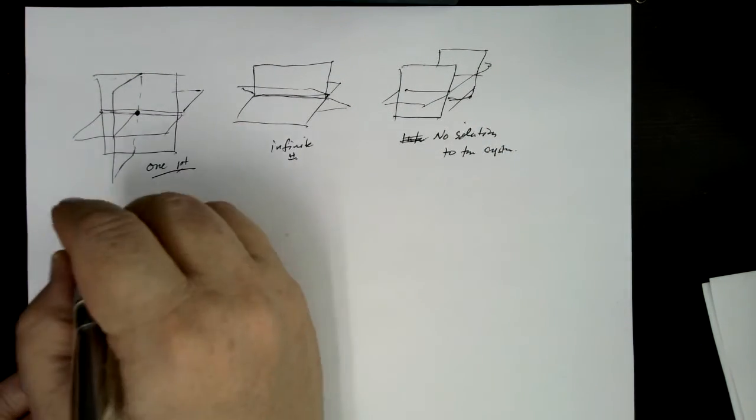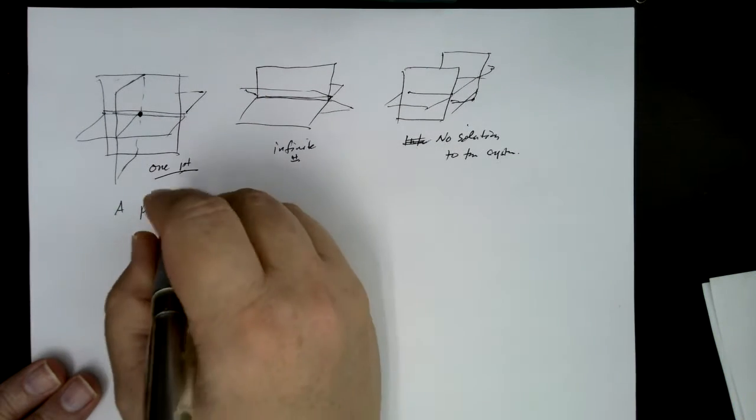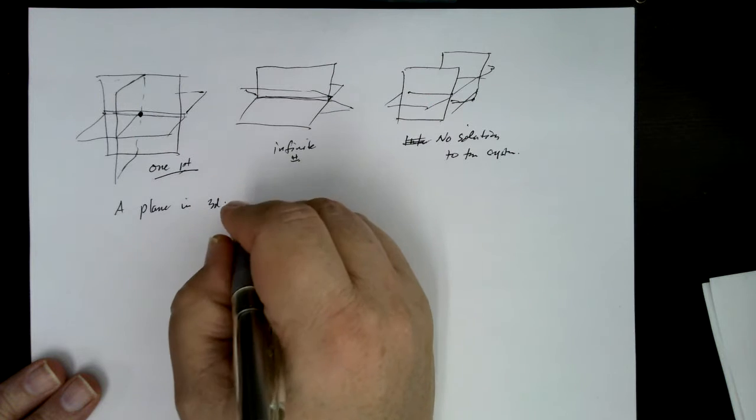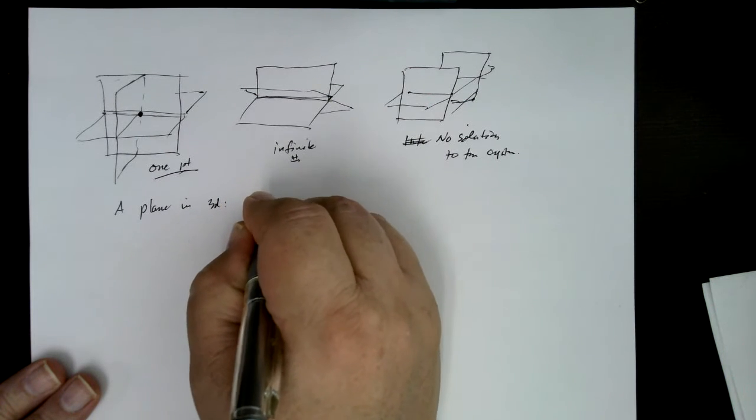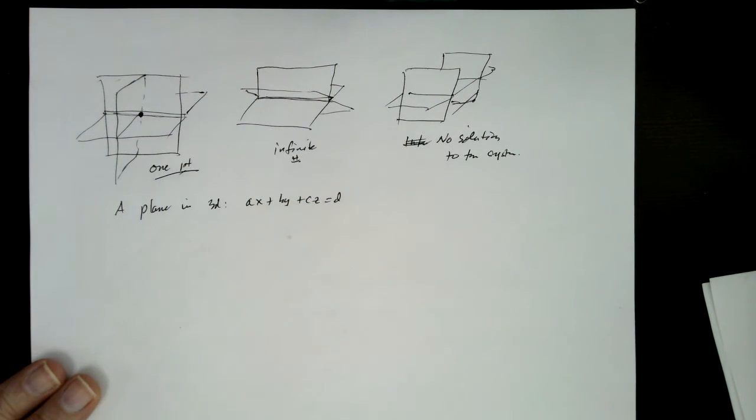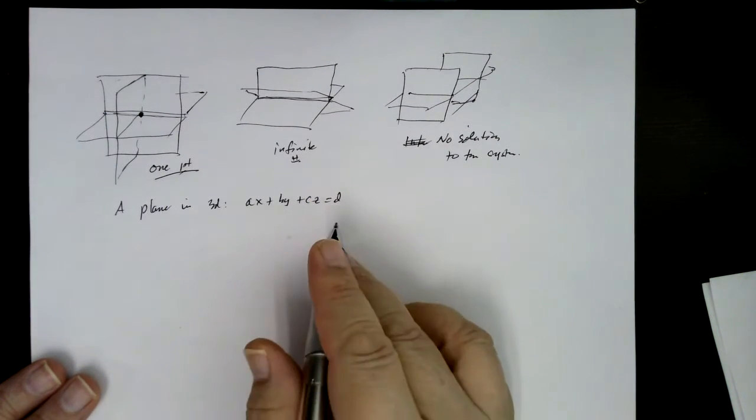So a plane in 3D, just to double check here, a plane in 3D can always be written as a times x plus b times y plus c times z equals d.